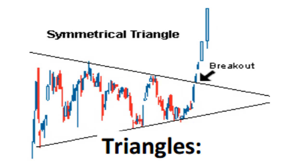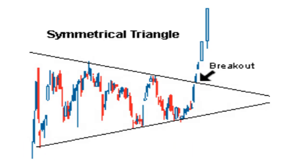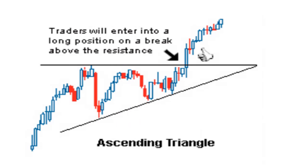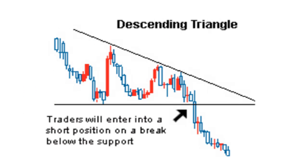Triangles are one of the most well-known chart patterns in technical analysis. The three most common types are symmetrical triangle, ascending triangle, and descending triangle. These chart patterns are considered to last anywhere from a couple of weeks, ideally more than 12 weeks, to several months. These are areas of consolidation after a trending move and are generally continuation patterns — the erstwhile trend resumes after the breakout. However, in certain cases they act as reversal patterns. They can appear both in uptrend and downtrend.